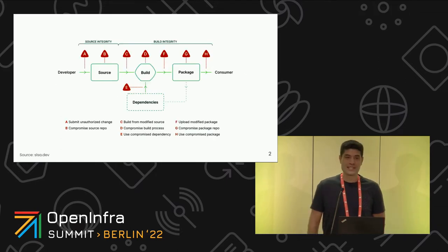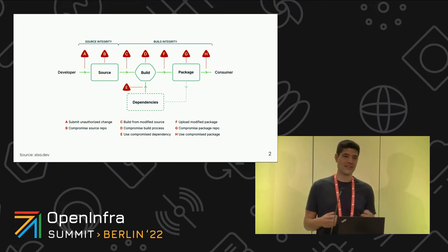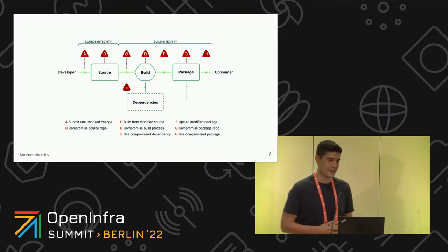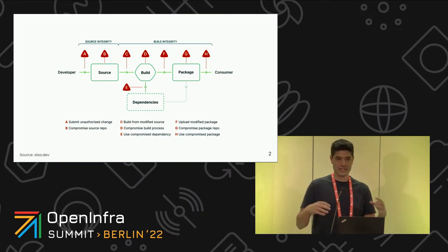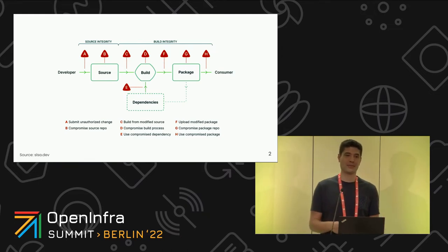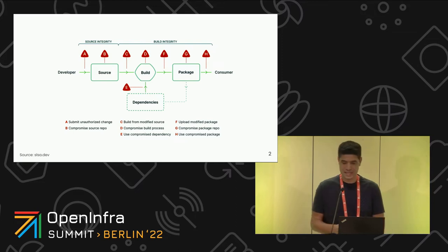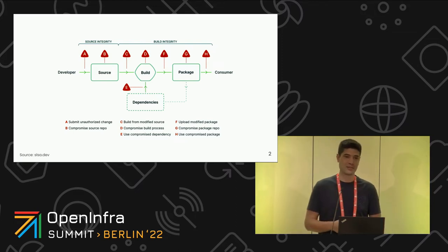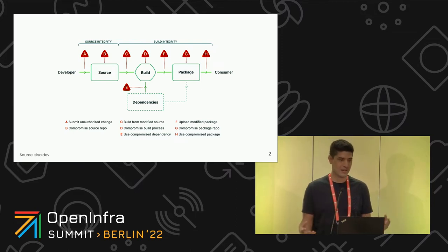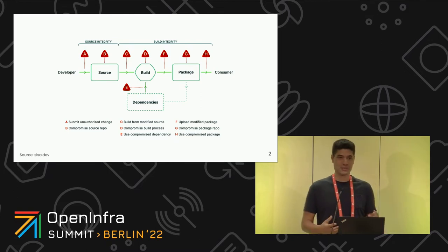Let's start by defining what a supply chain is. A supply chain is everything that's needed to deliver your product. In terms of software, that means your source code, how you build this code into artifacts, and where these artifacts are stored. In the case of Kubernetes, you're probably building container images on a CI/CD pipeline — and that's what we need to secure.